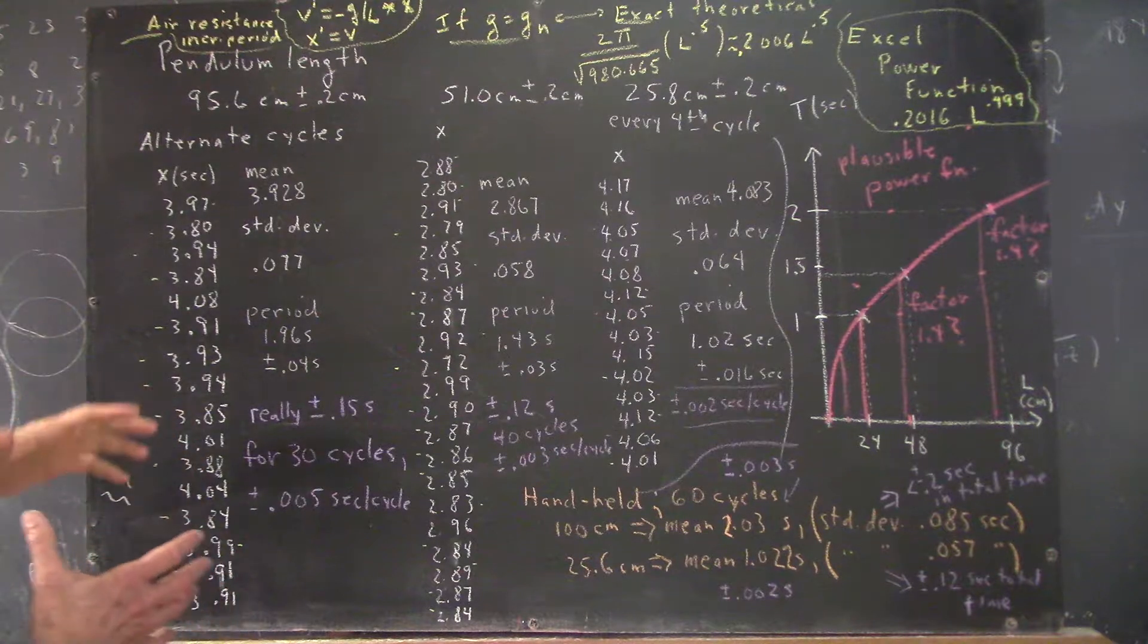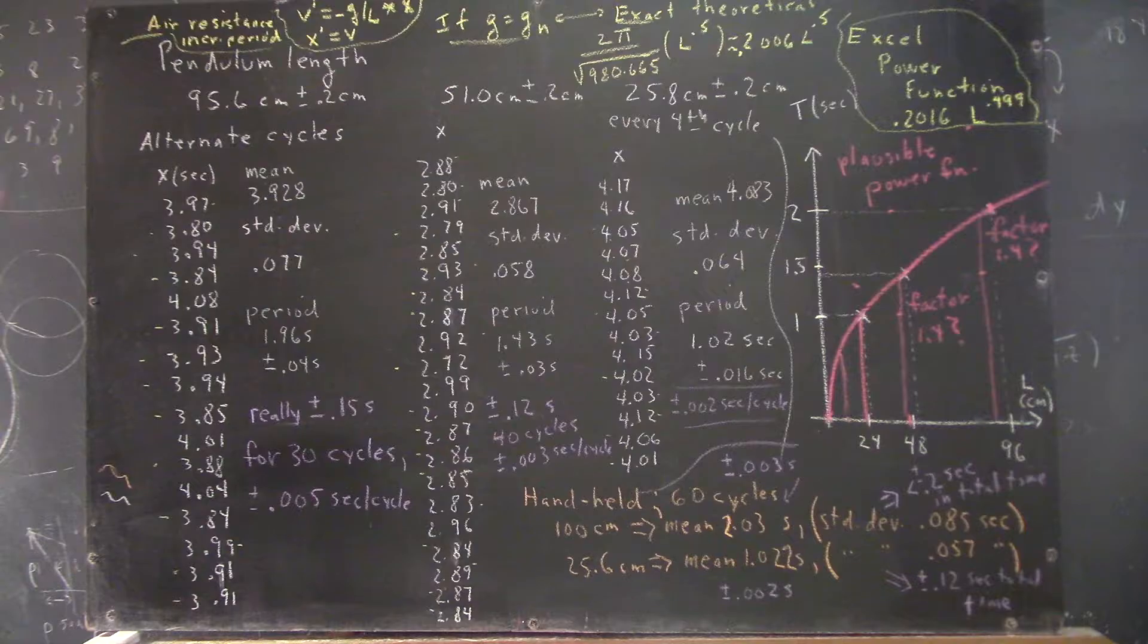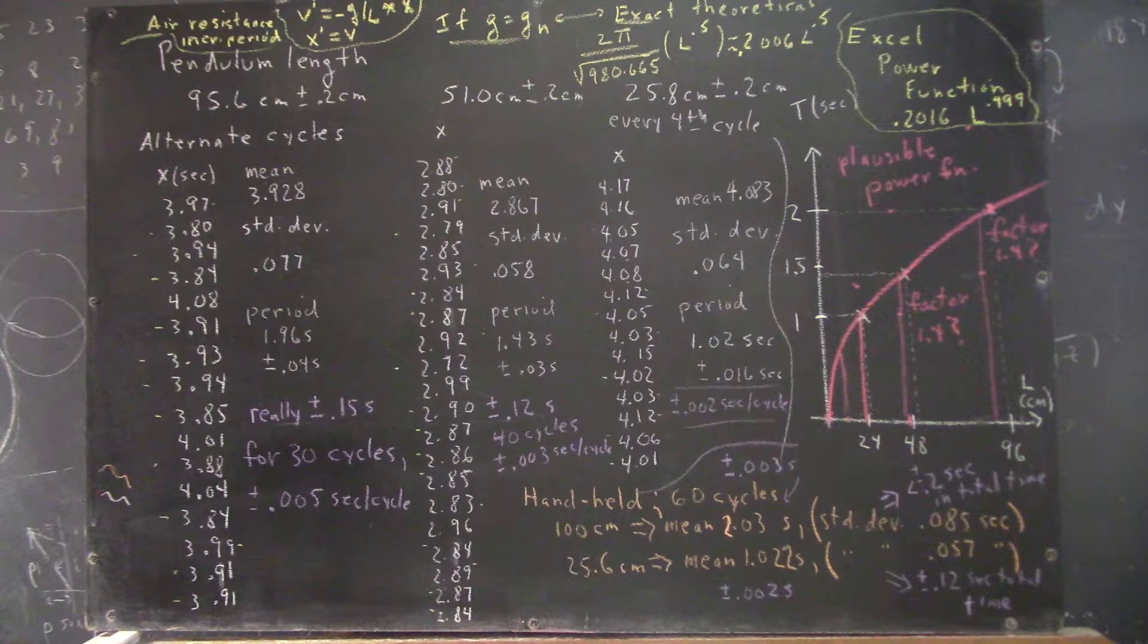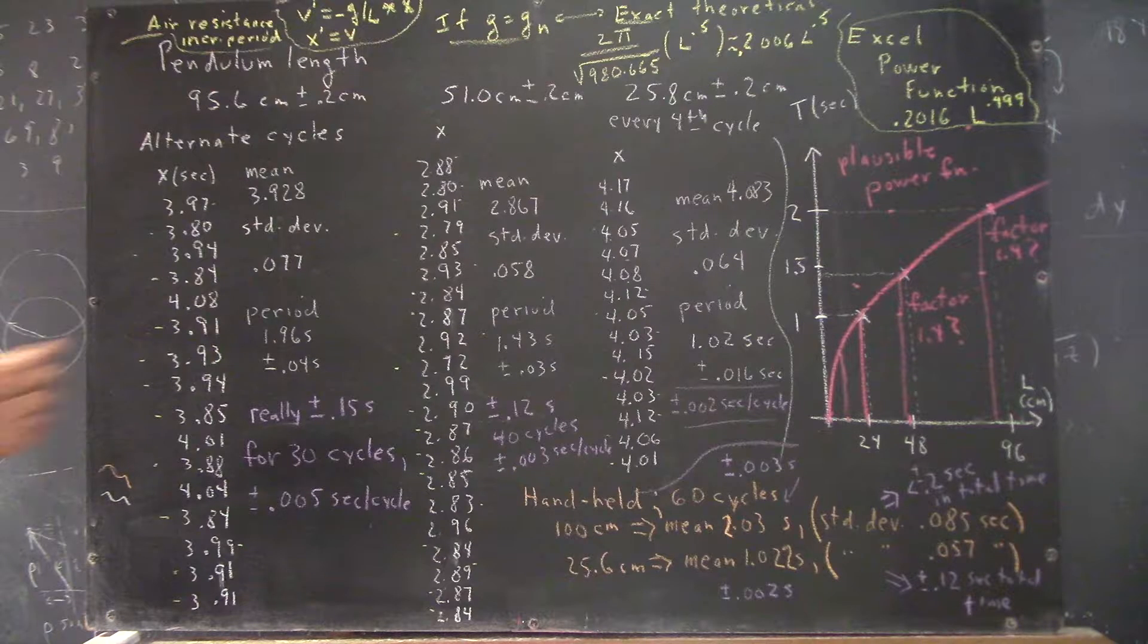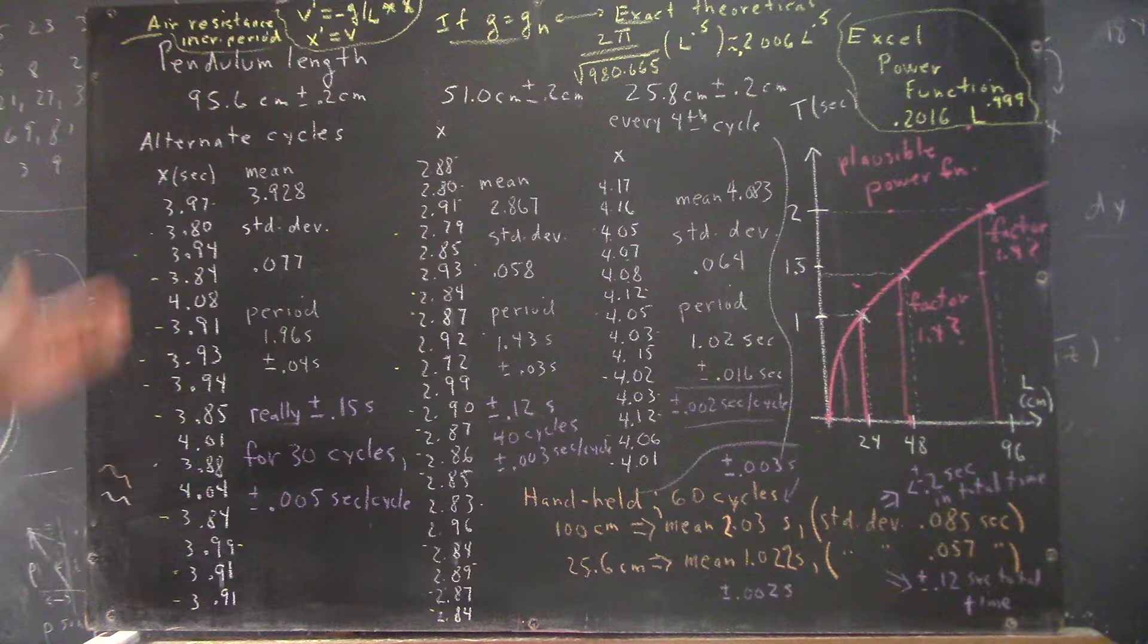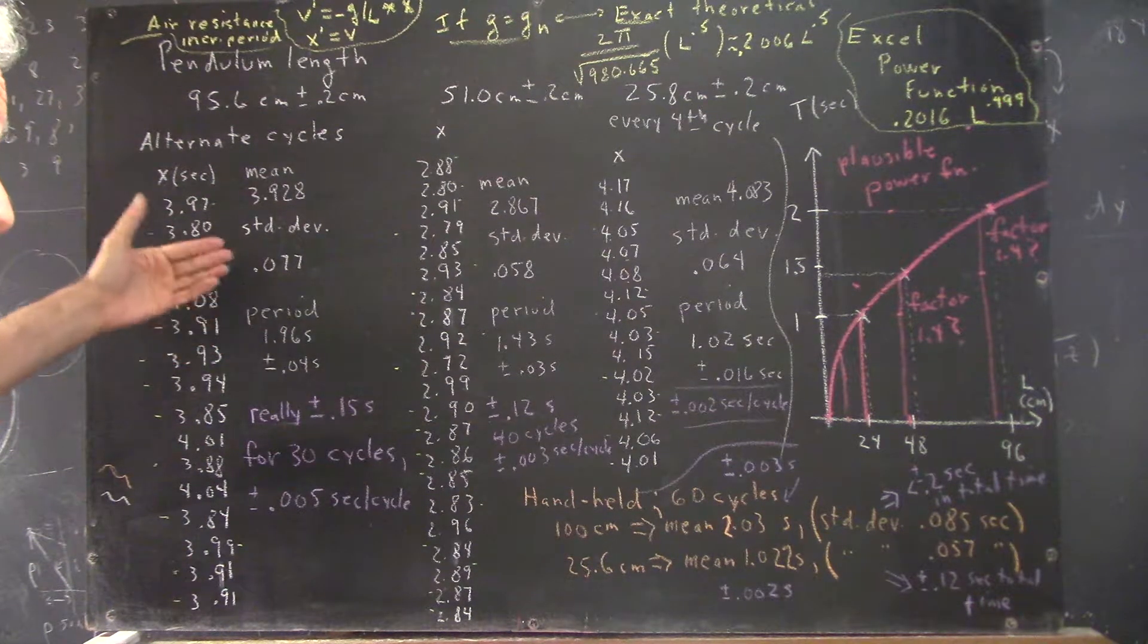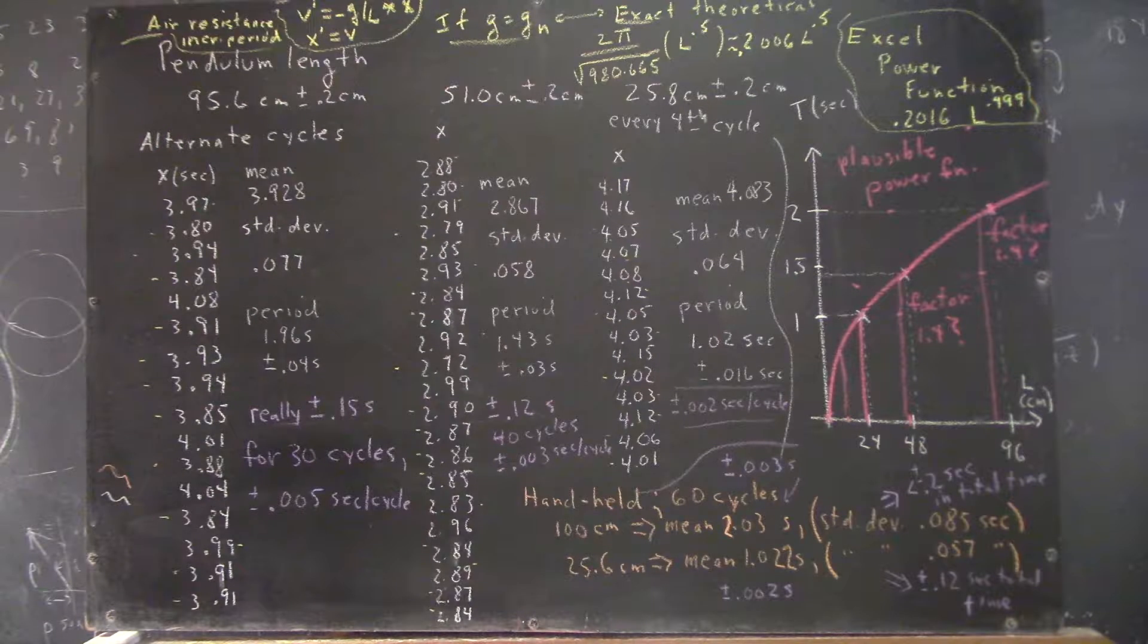So, we really measured 32 alternate cycles, and that means that we measured this for a period of about 60 seconds, in fact, a little more than 60 seconds, because we measured 32 almost two-second cycles. This went on for 63 seconds or so.